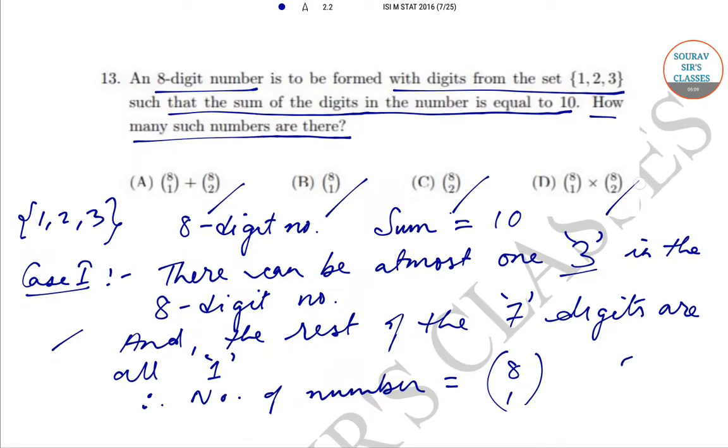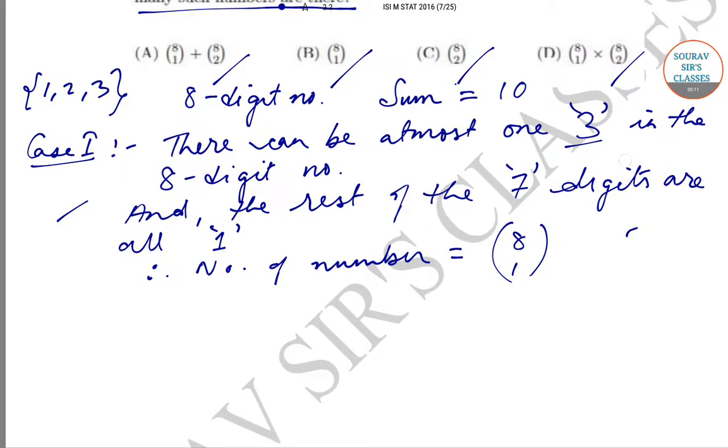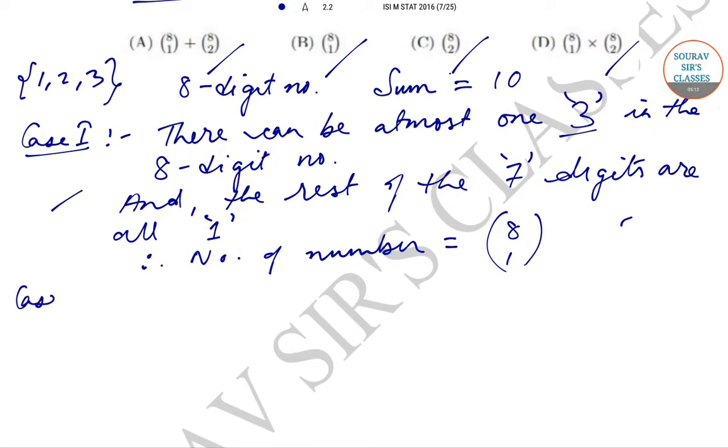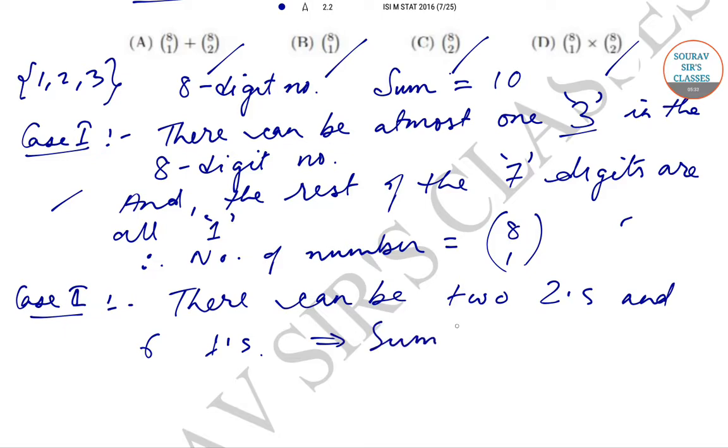move on to the next case. In case 2, there can be two 2s and six 1s, and here also the sum will be equal to 10.